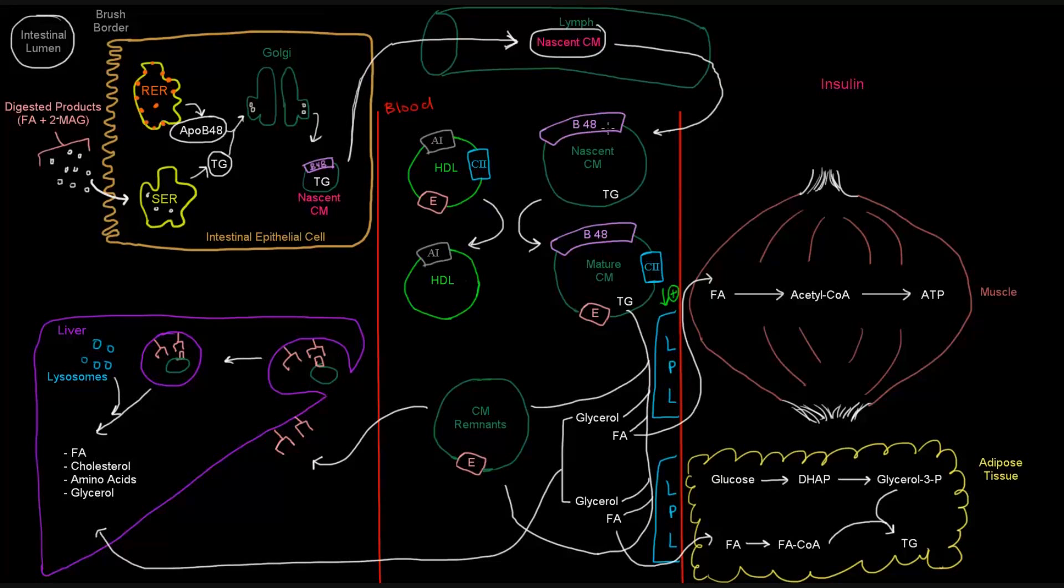So this nascent chylomicron with its B48 apoprotein needs to mature. And in order to mature, it needs HDL to give up both its ApoC2 as well as its ApoE to the chylomicron. The chylomicron picks them up and becomes a mature chylomicron here. And the HDL hops off with only its A1.